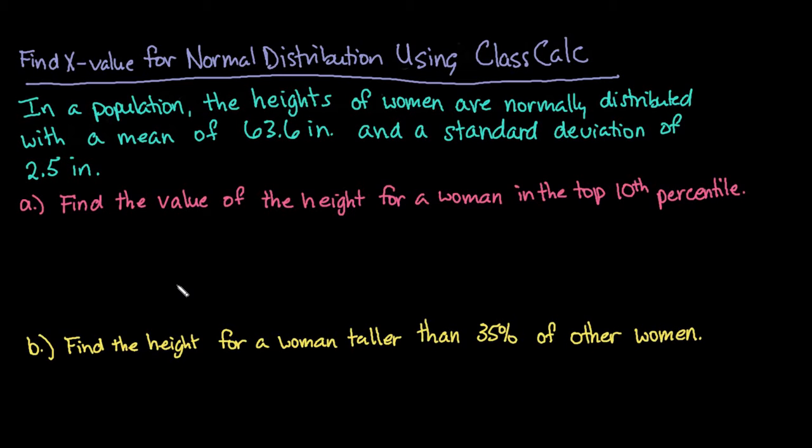In a population, the heights of women are normally distributed with a mean of 63.6 inches and a standard deviation of 2.5 inches. We are going to use our calculator to help us find this. We have a normally distributed population that is centered at the mean, so it's centered at 63.6. Our standard deviation, our sigma, is going to be 2.5.